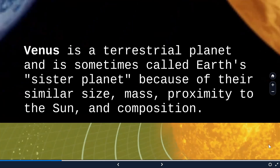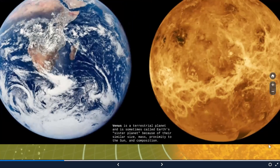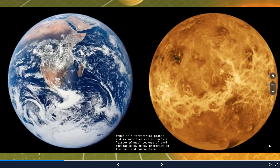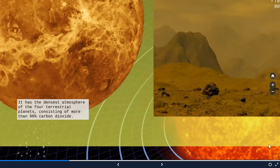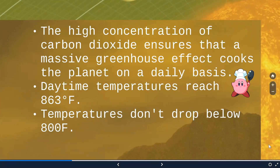Going to the second planet, Venus — it is also a terrestrial planet and is sometimes called Earth's sister planet because of their similar size, mass, proximity to the sun, and composition. It has the densest atmosphere of the four terrestrial planets, consisting of more than 96% carbon dioxide. Due to this high concentration of carbon dioxide, there is a massive greenhouse effect on this planet, causing its temperature to range from 800 to 863 degrees Fahrenheit.